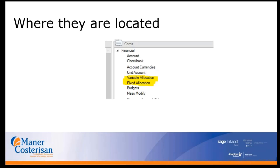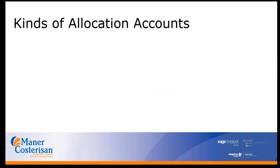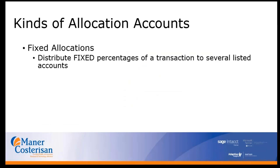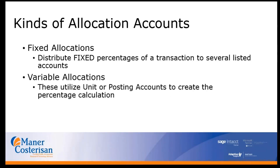Where are they located? They are located under Cards > Financial. If you click on the navigation pane for financial, you'll go to your Cards menu, then go to Financial, and you'll see variable allocation and fixed allocation accounts. Fixed allocation accounts distribute fixed percentages of a transaction to several listed accounts, while variable allocation accounts utilize unit and/or posting accounts to create the percentage calculation.